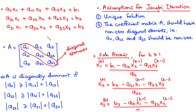Considering this 3x3 system of linear equations, to solve this system using the Jacobi iteration method, there are at least two assumptions we need to make. The first is that the system should have a unique solution, and the second is that the coefficient matrix generated from this 3x3 system should have non-zero diagonal elements — that is, A11, A22, and A33 should all be non-zero.